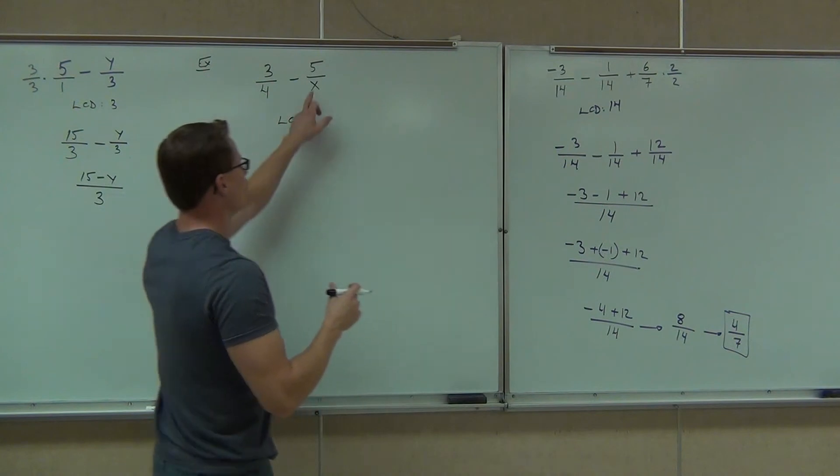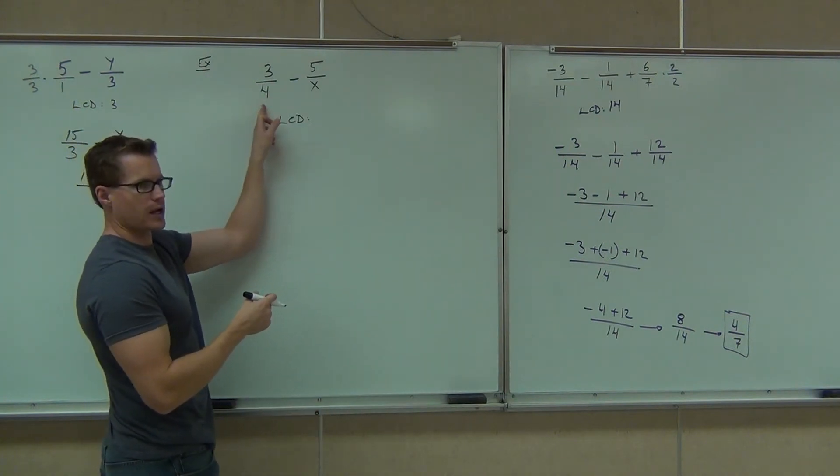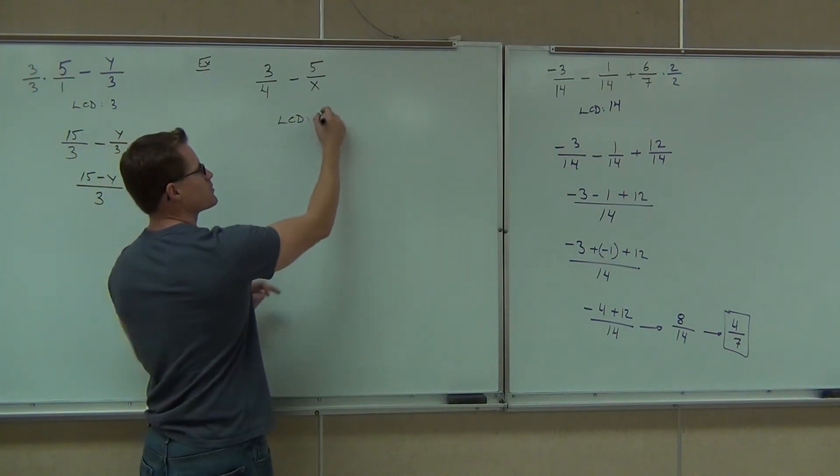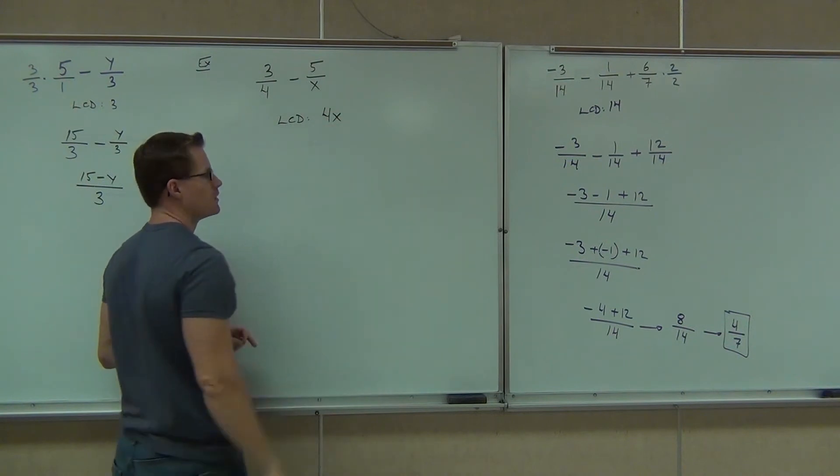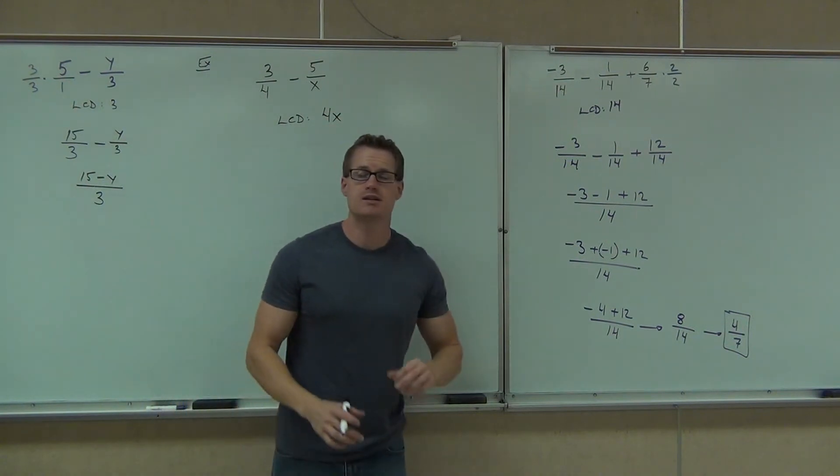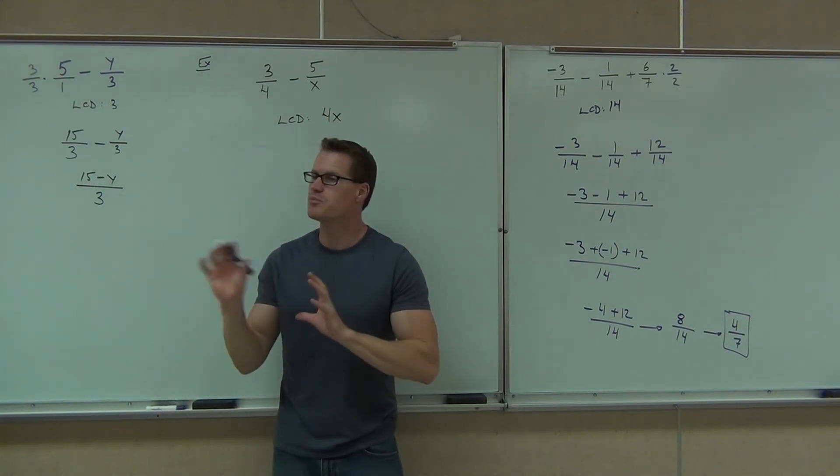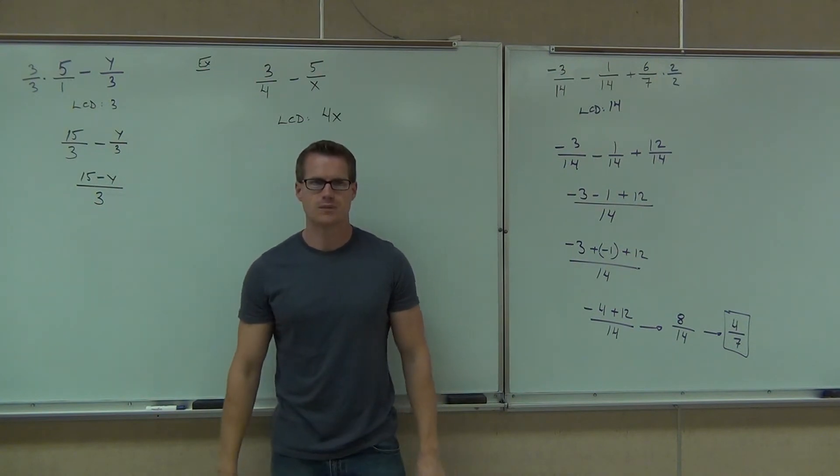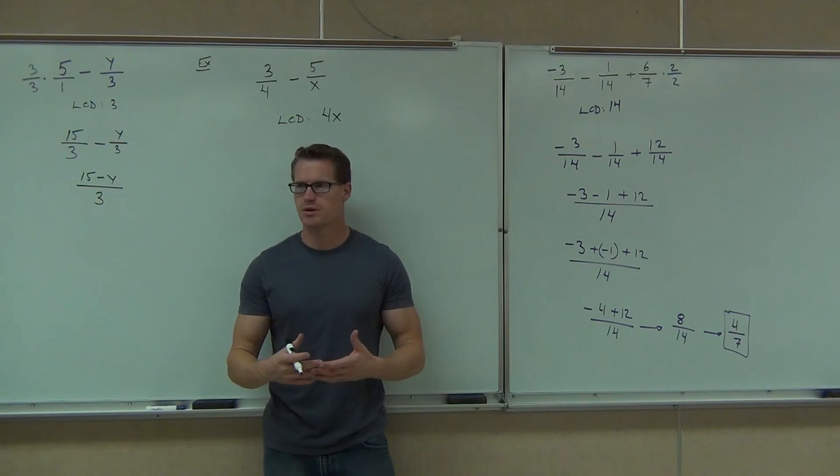If you don't have a common factor, what we knew is that our LCD was a product of our denominators. If we have 4 and x, there's nothing in common between 4 and x. We don't even know what x is right now. So in order to find out a common denominator, if they don't have any shared factors, which they don't, I know that the LCD is simply the product of those two denominators.